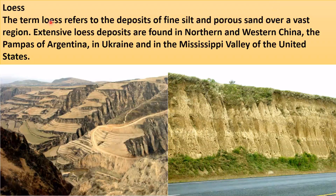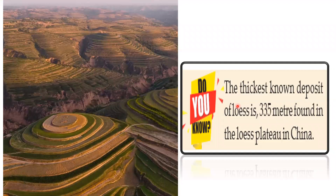Loess. The term loess refers to deposits of fine silt and porous sand over a vast region. It appears light yellow in color. Extensive loess deposits are found in northern and western China, including parts of the Gobi Desert, the Pampas of Argentina, Ukraine, and the Mississippi Valley of the United States. The thickest known deposit of loess is 335 meters, found in the Loess Plateau in China.